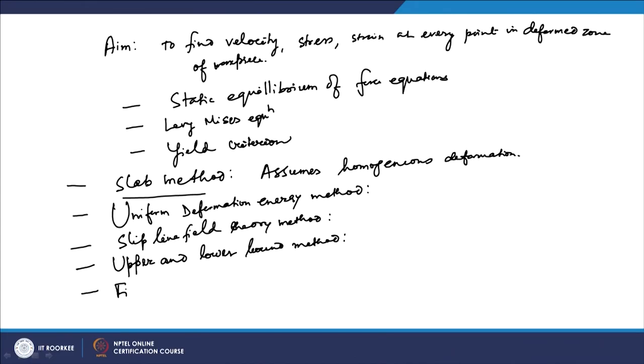The fourth method is the upper and lower bound method, based on limit analysis. It uses reasonable stress values and velocity fields to calculate the bounds within which the actual forming load should lie. The fifth and most modern method is the finite element method, also known as the matrix method, which allows large increments of deformation for rigid plastic materials and saves significant computational time. All these methods are in order of increasing complexity; the slab method is the easiest and most commonly used.